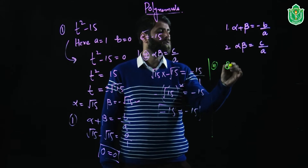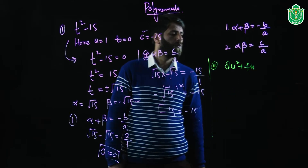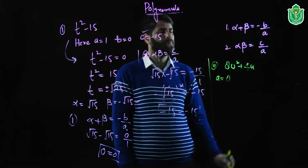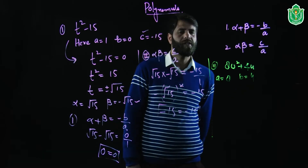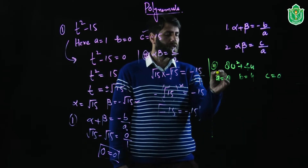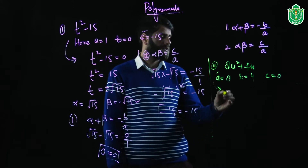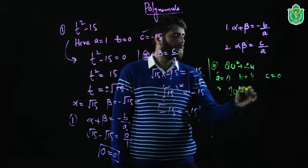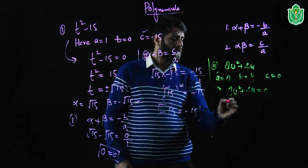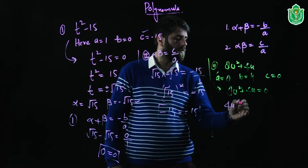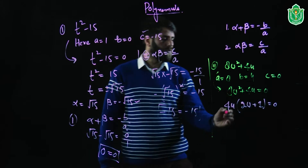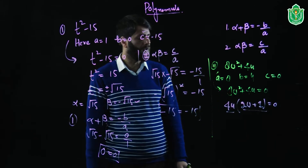Here a is equal to 8, b is equal to 4, and c is equal to 0 because the constant term is absent. To find the zeros we equate this polynomial to 0: 8u squared plus 4u equals 0. Taking 4u as a common factor we get 4u into 2u plus 1 equals 0.